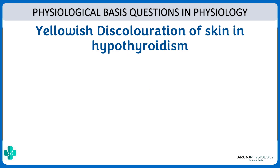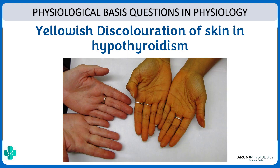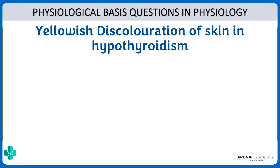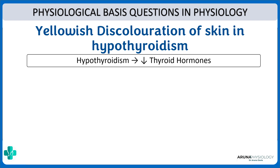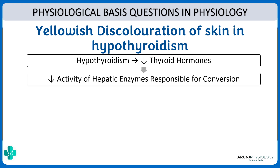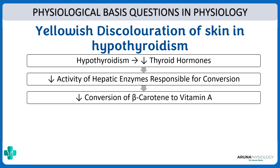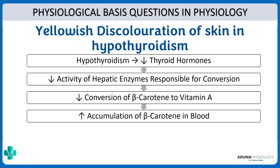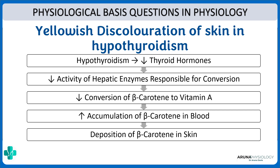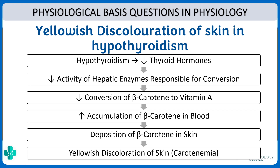Another important physiological basis: why is there yellowish discoloration of skin in hypothyroidism? That is because of accumulation of a pigment called beta-carotene. In hypothyroidism there is decreased thyroid hormone levels, which means decreased activity of the hepatic enzyme responsible for conversion of beta-carotene to vitamin A. So there would be increased accumulation of beta-carotene in the blood, leading to deposition of beta-carotene in the skin and thereby causing yellowish discoloration — which is called carotenemia.